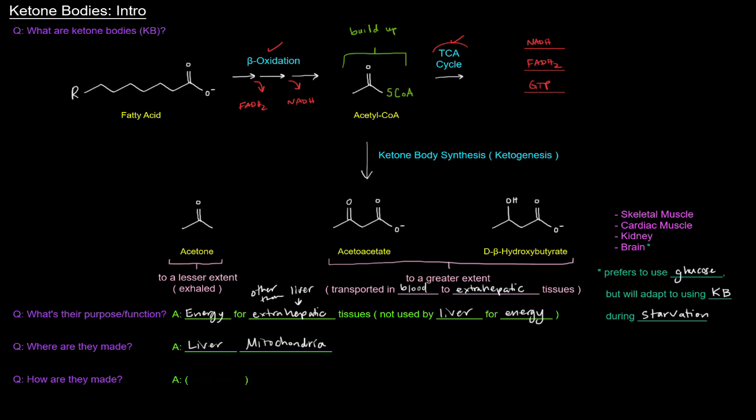We mentioned beta-oxidation and the TCA cycle. Those both happen in the mitochondrial matrix. If the TCA cycle is backed up, the acetyl-CoAs will go through ketone body synthesis to make these ketone bodies, which can be transported in the blood to tissues outside of the liver. Those tissues can use these ketone bodies for energy.